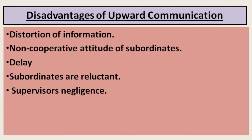The third disadvantage is delay. Delay means that the right information is not reaching the upper channel through the superior at the right time. One reason can be that information is distorted; another reason is that there are many steps in your channel where you have to pass information to a particular person, and there are many barriers. Obviously the information will be delayed. If the right information does not reach the right person at the right time, then there will be no value. This counts as a disadvantage of upward communication.